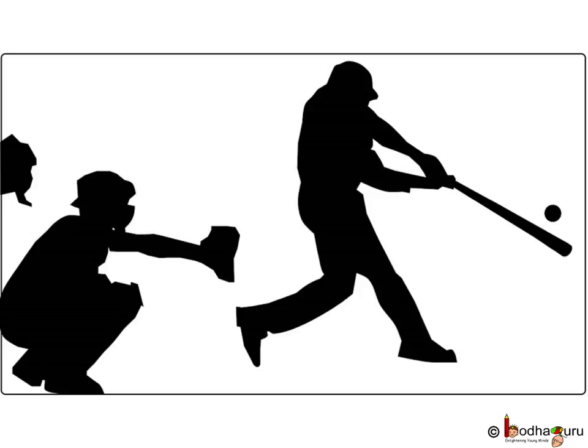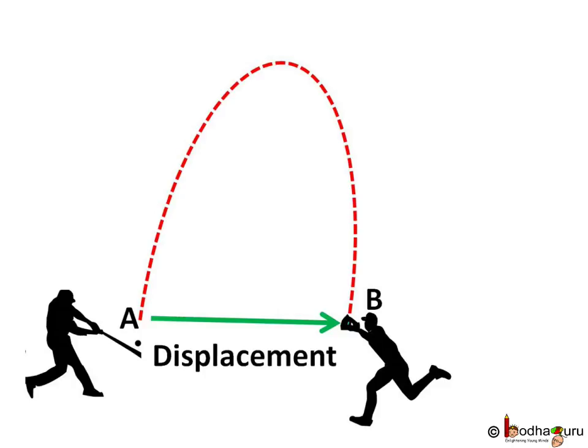Let us take another example. In baseball, the person who hits the ball is called a hitter, similar to a batsman in cricket. Say the hitter hits the ball hard and it goes high — meaning the ball was travelling a good distance on a curved path. Then it comes down and falls into the hands of a fielder nearby. This means the distance travelled by the ball was more but the displacement was small. The measure of the straight line between initial and final position is the displacement, so AB is the displacement.